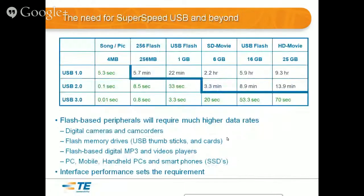As you move to USB 3 you get higher data rates. Back in USB 1, downloading a high-def movie took 9 hours. USB 2 could do it in almost 14 minutes, but with USB 3 it drops to 70 seconds — much better when you're downloading movies or backing up a hard drive with lots of data.